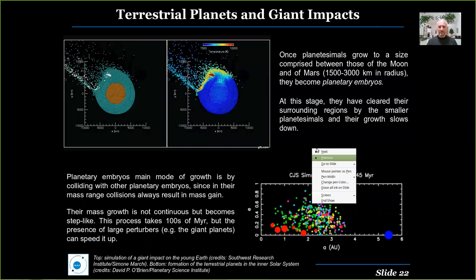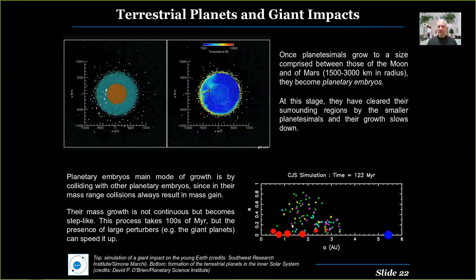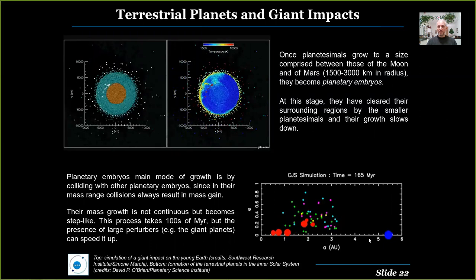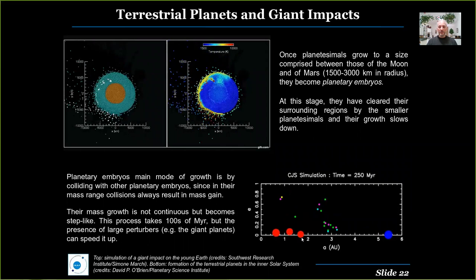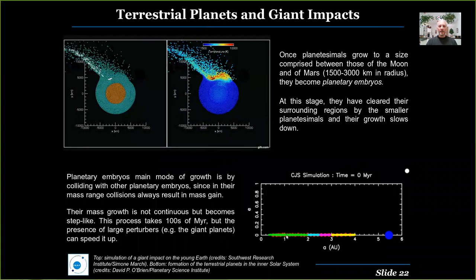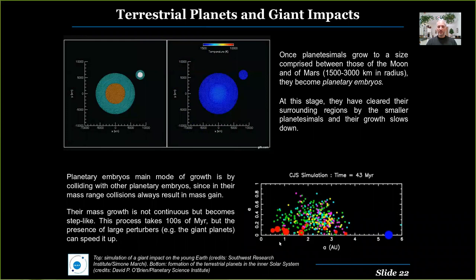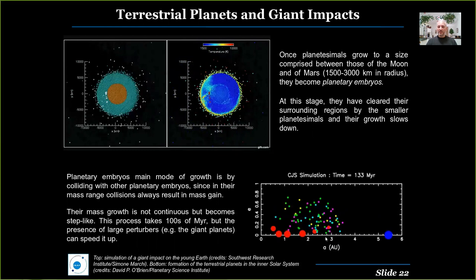As you can see in the simulation on the bottom right, the oligarchs — the planetary embryos in red — interact with the population of smaller bodies of different colors representing the different regions from which the planetesimals originated. The number of smaller bodies decreases, as does the number of oligarchs, until we end up in this simulation with terrestrial planets mimicking Venus, Earth, and Mars. There is a complete remixing of planetary material as the embryos grow into oligarchs and then terrestrial planets.